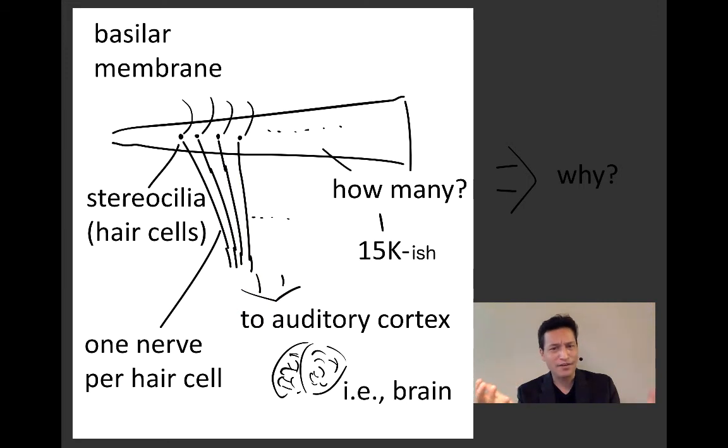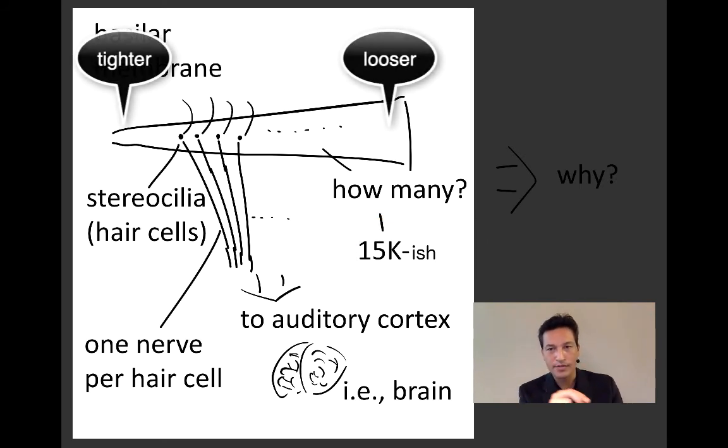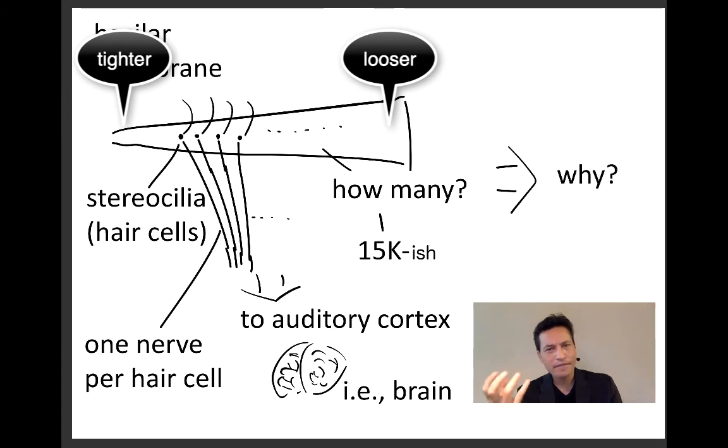So why are there so many nerves? It turns out that there are about 15,000 stereocilia on the basilar membrane, all along from the tighter end to the looser end. Why 15,000?